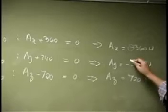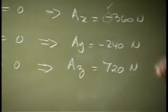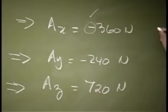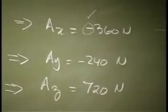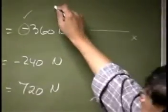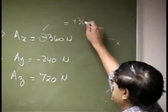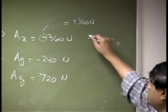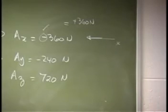So, this is negative, which means the direction you chose is not the correct direction. And if your X was going like this, then this here could be changed to positive 360 Newtons, and your actual component will be opposite to that.